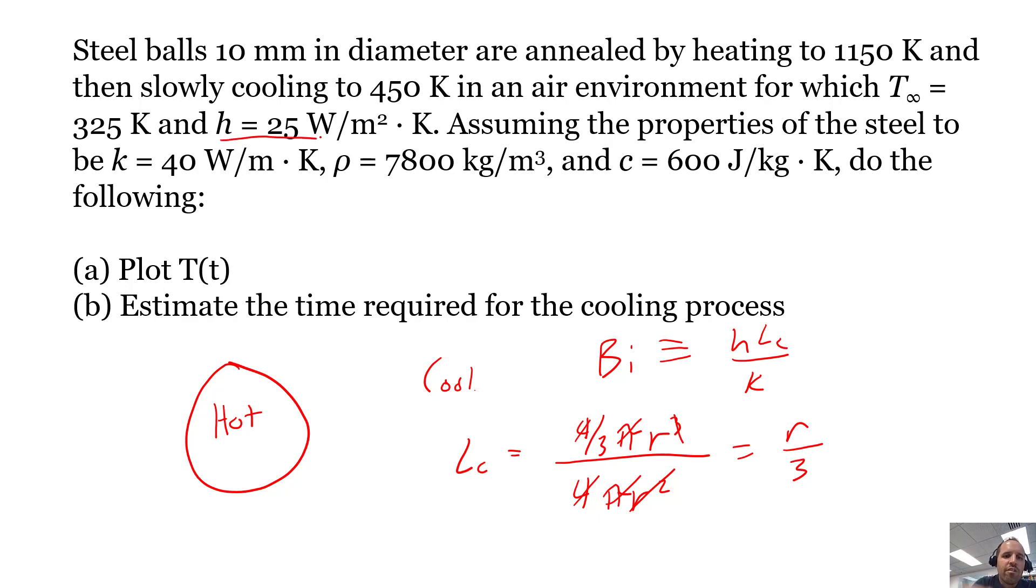Let's evaluate this Biot number based on what we know. Our Biot number equals h, 25 watts per meter squared per Kelvin, times our characteristic length r divided by 3. Our radius is 0.005 meters divided by 3, and k is 40 watts per meter per Kelvin. When we compute all of those we get a Biot number equal to 0.001. That number is much much less than 1.